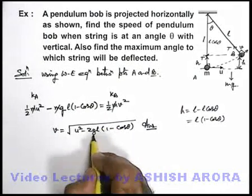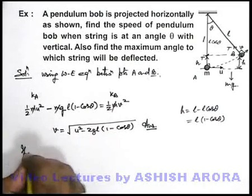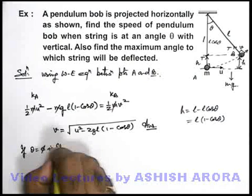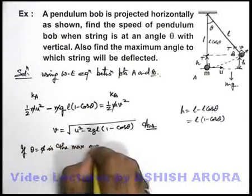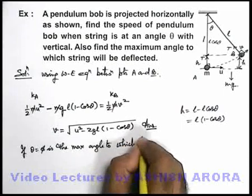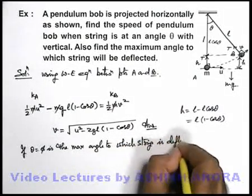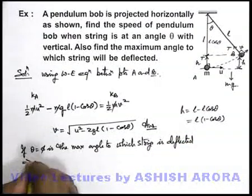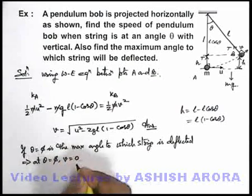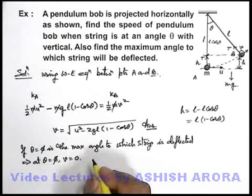Now we are also required to calculate the maximum angle to which it goes. So we can say if theta equal to phi is the maximum angle to which string is deflected. This implies at theta is equal to phi velocity must be zero. If it is the maximum angle at that point certainly the bob velocity should be zero.